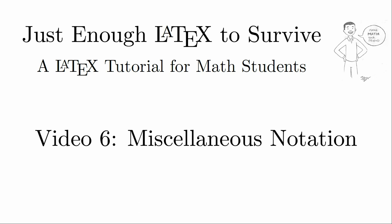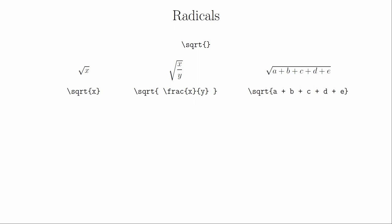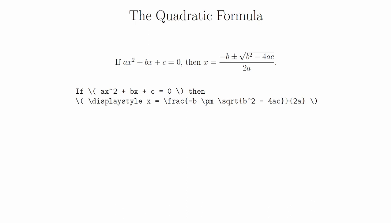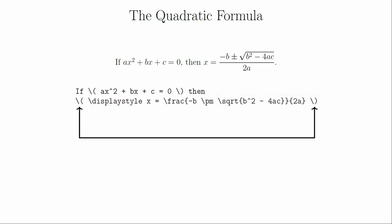In this last video on mathematical notation, we're going to pick up some random bits that didn't fit well into the other videos. Using \sqrt will create a square root symbol over everything inside the brackets — the radical will resize itself automatically. This also takes an optional argument to create an nth root, which you put in square brackets before the curly brackets. The most obvious equation to write with this is the quadratic formula. Notice that we used pm for the plus or minus symbol. Remember that every bracket you open must be closed — otherwise your document will probably not compile, or won't look the way you want it to. You would use mp for a minus or plus symbol instead.